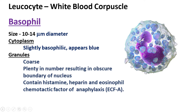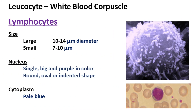Basophils contain histamine, heparin, and eosinophil chemotactic factor of anaphylaxis. Lymphocytes may be large or small: large lymphocytes vary from 10 to 14 micrometers in diameter, while small lymphocytes vary from 7 to 14 micrometers. Lymphocytes contain a single large purple nucleus, which can be round, oval, or indented in shape. The cytoplasm appears pale blue in color.